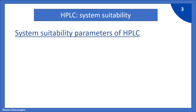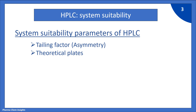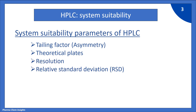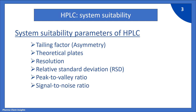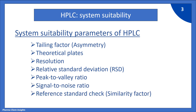Let us see what are the system suitability parameters of HPLC. First is tailing factor, also called as asymmetry factor. Second is theoretical plates. Third is resolution. Fourth is relative standard deviation, also called as RSD. Fifth is peak to valley ratio. Sixth is signal to noise ratio. Seventh is reference standard check, also called similarity factor.